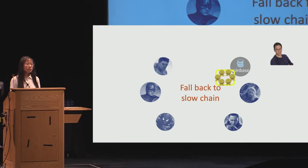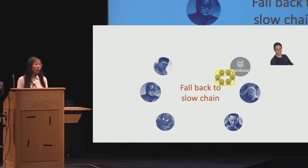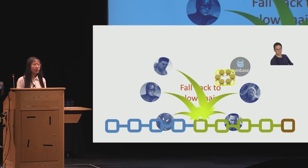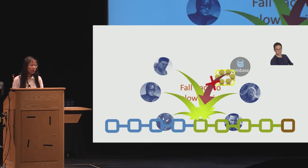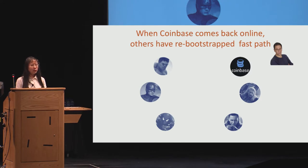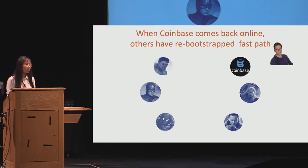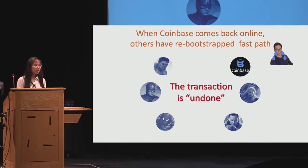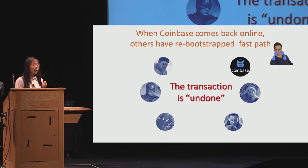Now all other nodes detect that the fast path has stopped for a long time, so they decide to fall back to the slow chain. When falling back, every node is supposed to post all confirmed transactions onto the slow chain. The Coinbase node is also supposed to do so, but because it is offline, it fails to post this transaction. After a while, when the Coinbase node comes back online, all other nodes have already re-bootstrapped a new fast path, and that transaction is not included in anyone else's log. So the transaction is effectively undone by the rest of the network, and the user loses both the car and the money.